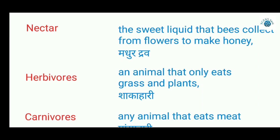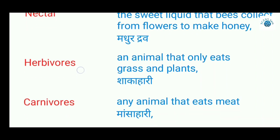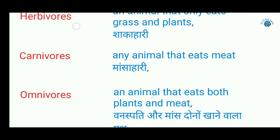Herbivores are those animals that only eat grasses or plants, like goats, horses, and cows. In Hindi, they are called shakahari — those who only eat ghans (grass). Carnivores are those animals that eat only meat or animal food, like lions and tigers. In Hindi, they are called maansahari.